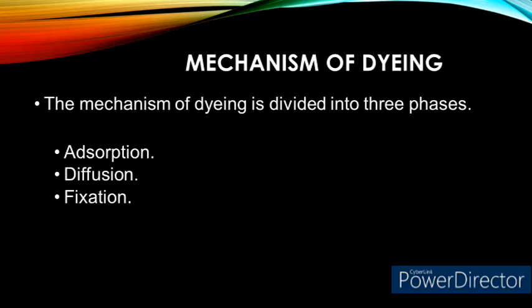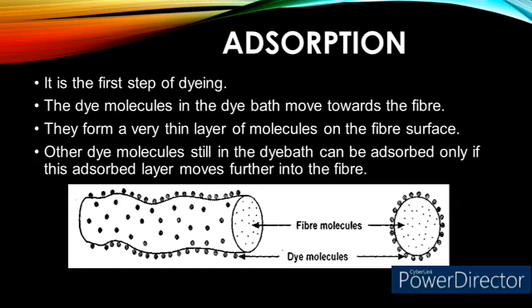Number one: adsorption of the dye stuff at the fiber surface. Number two: diffusion of the dye stuff through the internal structure of the fiber. And finally, fixation or anchoring of the dye molecule at a suitable location or dye site.